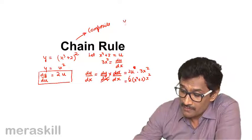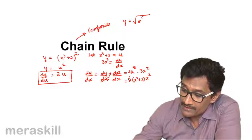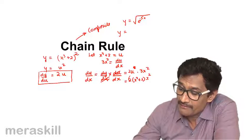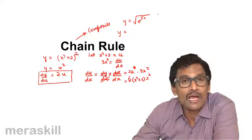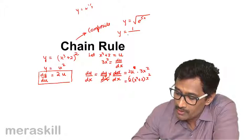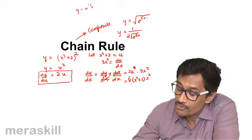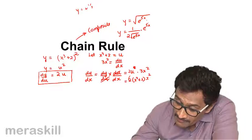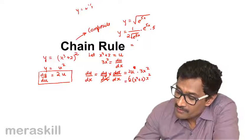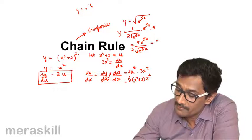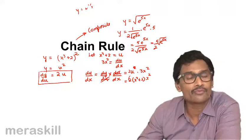Take another example: y = √(e^(5x)). Take the whole thing e^(5x) as m, so y = m^(1/2). Then dy/dm is 1/(2√m), which is 1/(2√(e^(5x))). Then find the derivative of e^(5x), which is e^(5x), then the derivative of 5x, that is 5. So ultimately it is 5e^(5x) divided by 2√(e^(5x)), which simplifies to 5/(2√(e^(5x))). This is how we use the chain rule for composite functions.